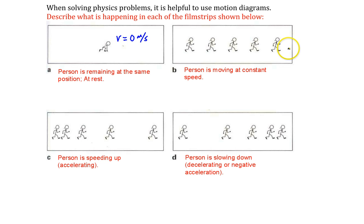In picture B, the person's moving at constant speed. So I'll show that by little arrows, but all equal length, because the velocity or the speed is not changing.